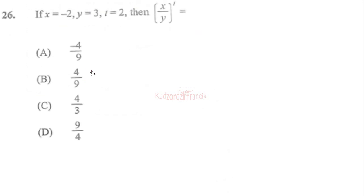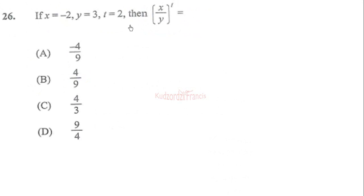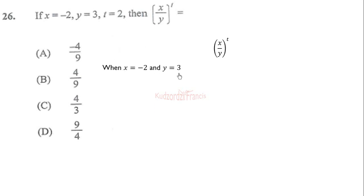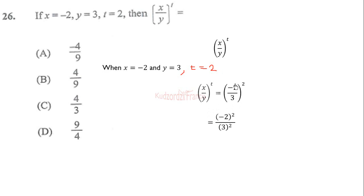Question 26: if x equals negative 2 and y equals 3, find the value of x squared over y squared. We do the substitution: negative 2 squared over 3 squared. Negative 2 squared means negative 2 times negative 2, which is positive 4, and 3 squared is 9. So the answer is 4 over 9. The correct answer is option B.